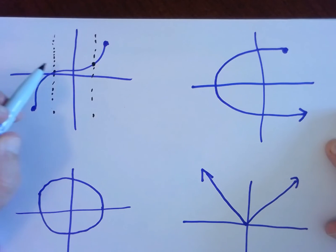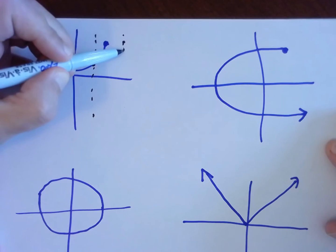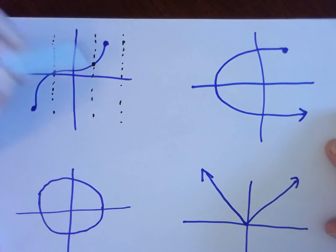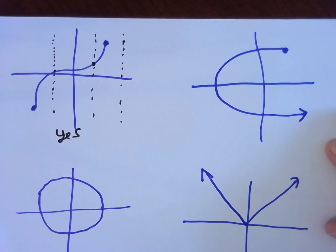Every possible vertical line I could draw would hit the graph at most once. This vertical line doesn't hit the graph at all, but that's okay. No vertical line hits the graph more than once. This does represent a function.